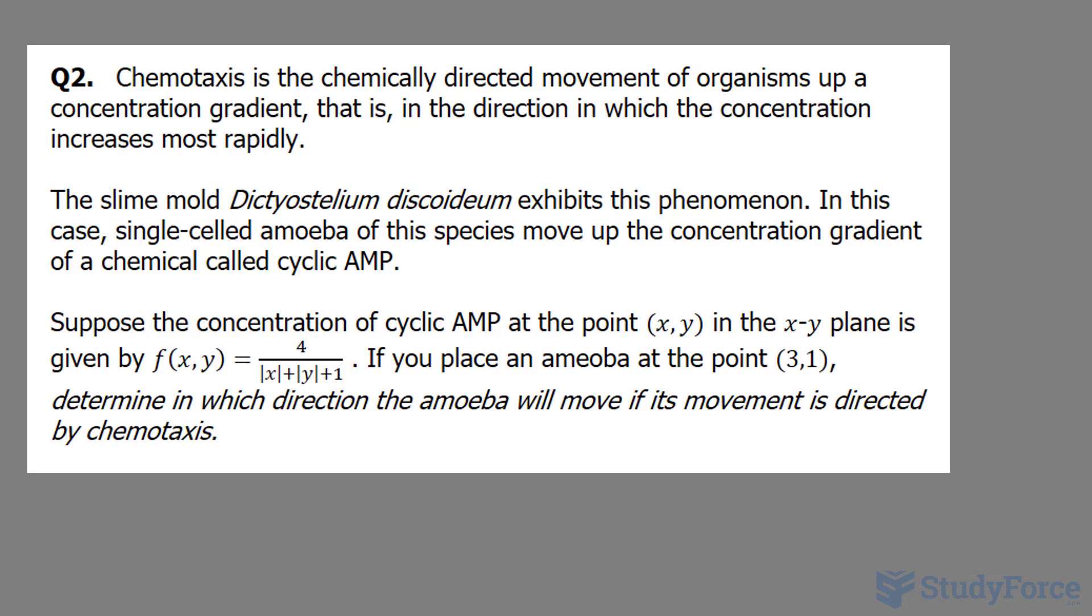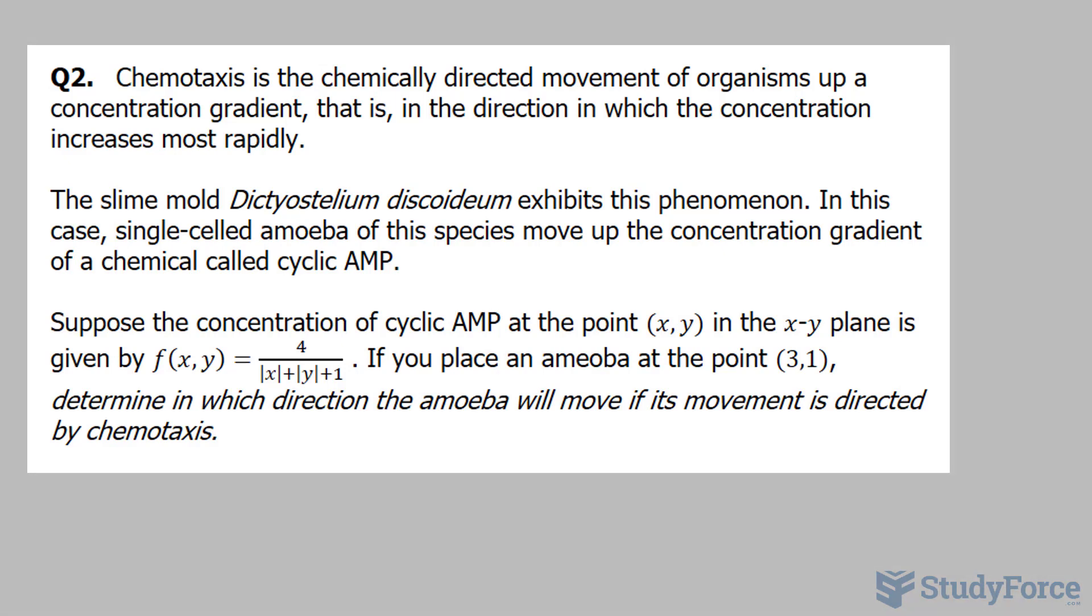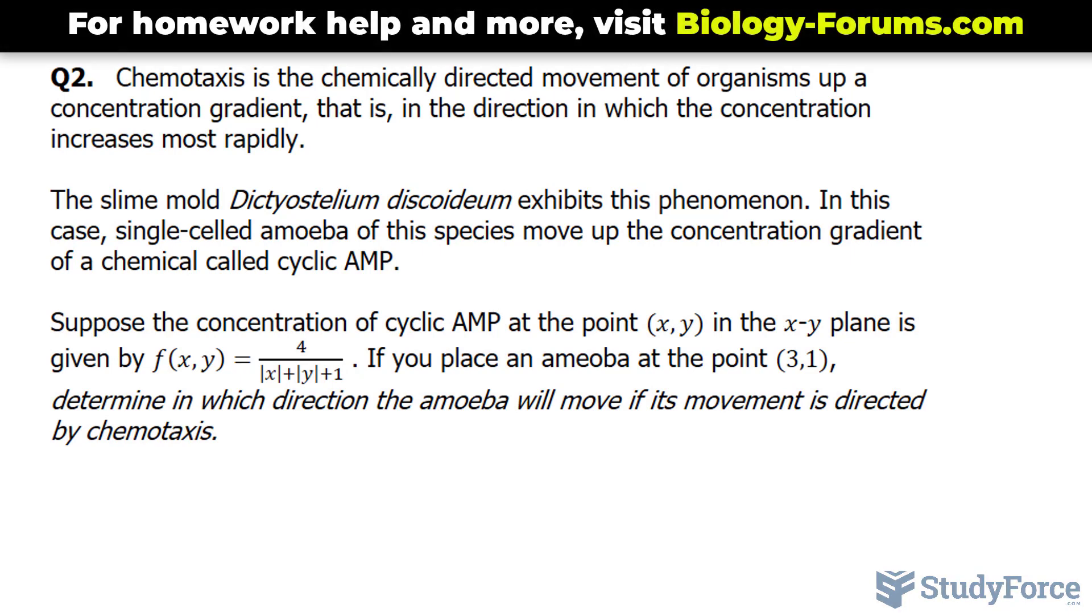Chemotaxis is the chemically directed movement of organisms up a concentration gradient, that is in the direction in which the concentration increases most rapidly. The slime mold Dictyostelium discoideum exhibits this phenomenon. In this case, single-celled amoeba of this species moves up the concentration gradient of a chemical called cyclic AMP.